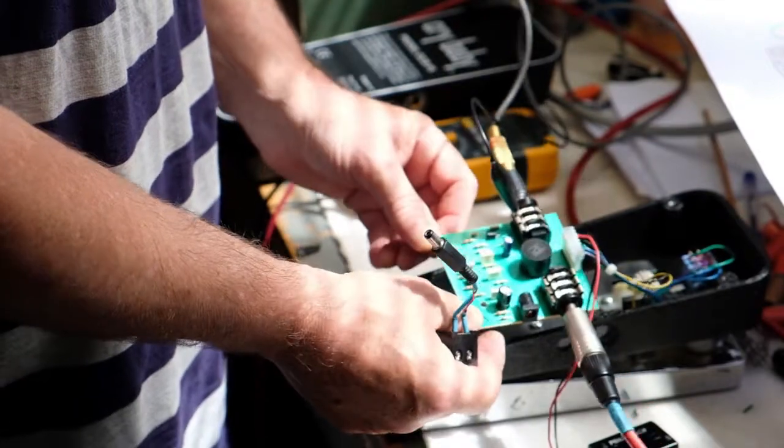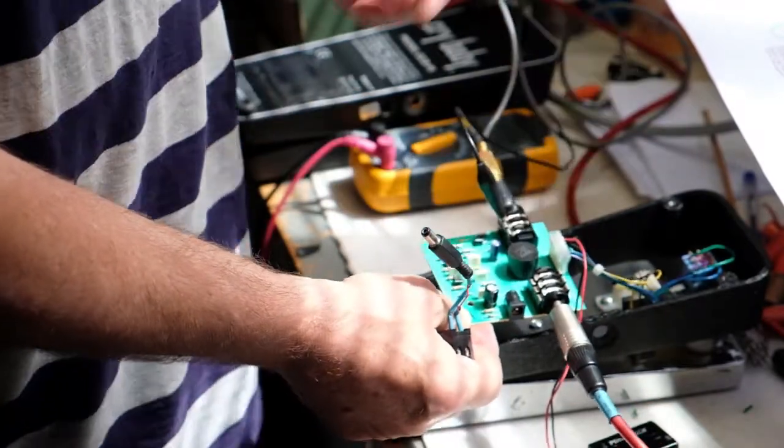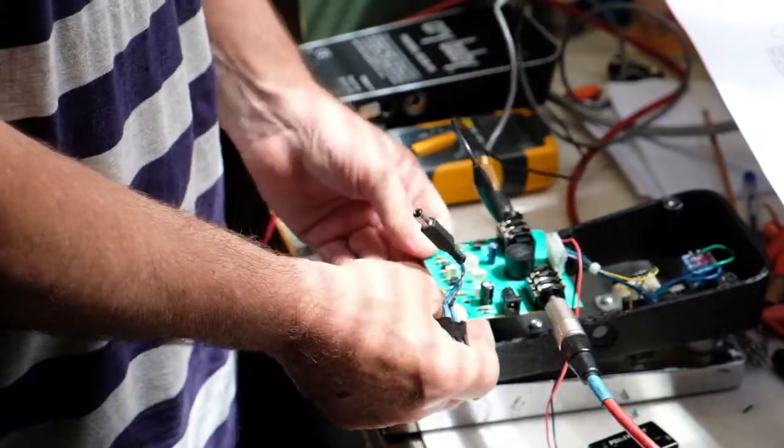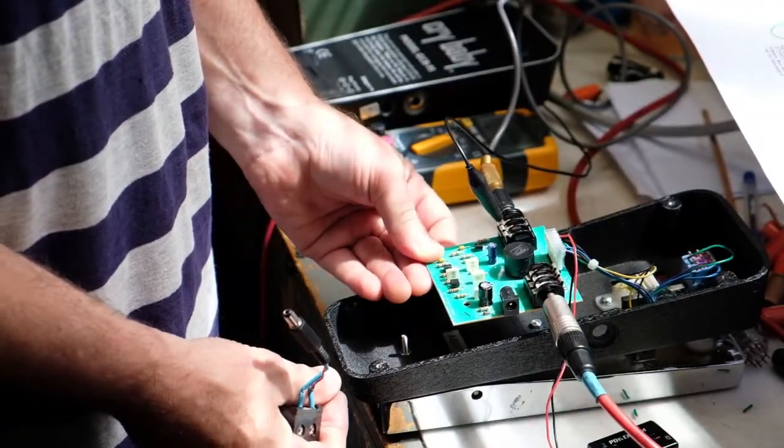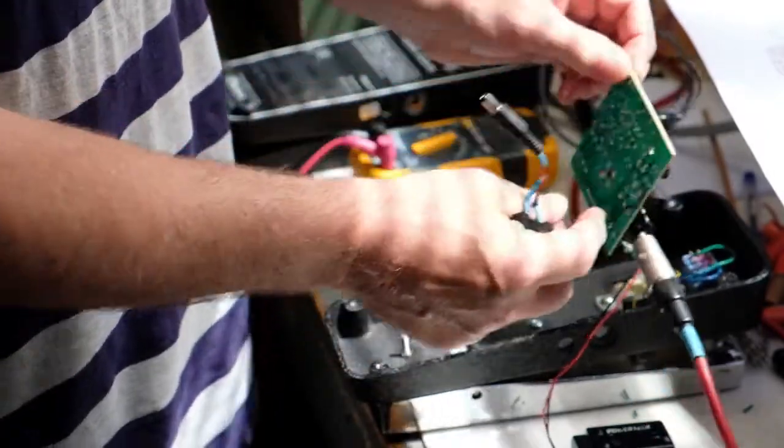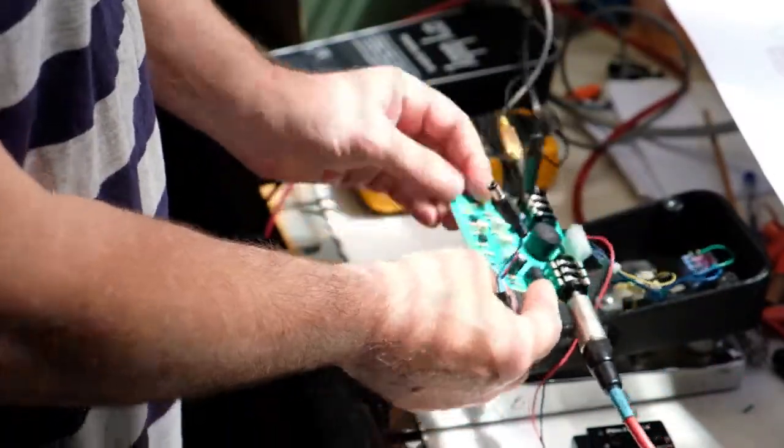Same old problem: surface mounted connectors screwed to a chassis, and then you've got something that moves all the time. It can break the connections on the back of the board, and in this case it was the actual power connector.